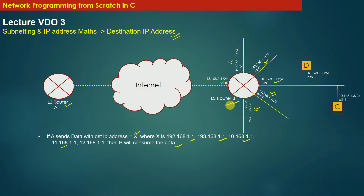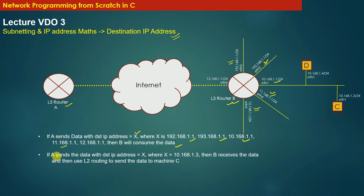This is the criteria of receiving and consuming data by a machine: the destination IP address must be equal to the IP address of any local interface of the receiving machine. But what if router A sends the data with destination IP address X where X is equal to, for example, 10.168.1.3?